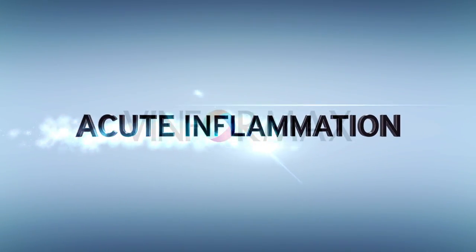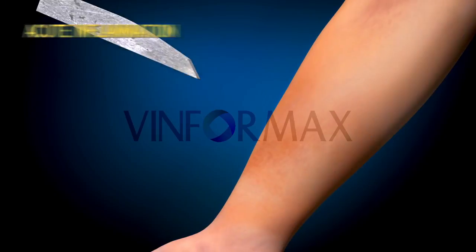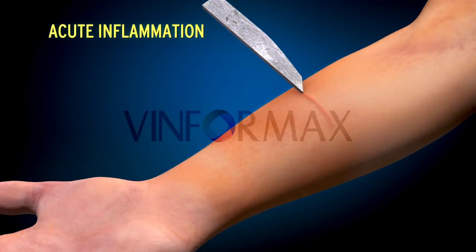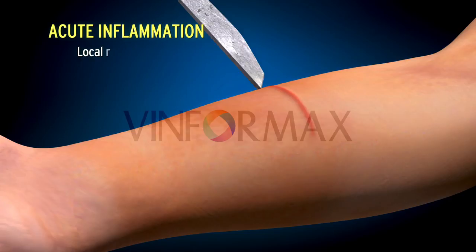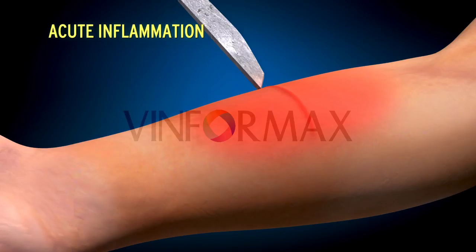Acute Inflammation. Inflammation is a local response of vascularized tissue to infection and tissue damage that recruits cells and molecules of host defense from the circulation to the location where they are required, in order to eliminate or limit the spread of the offending agent.